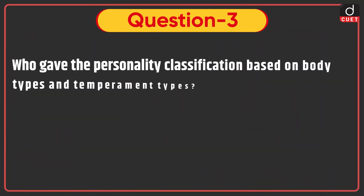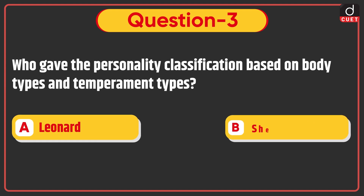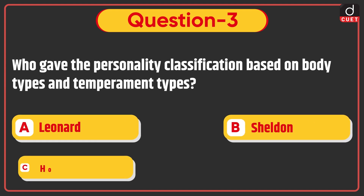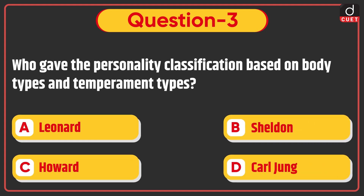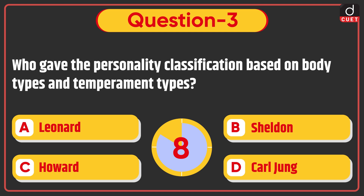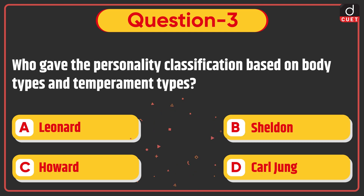Next question: who gave the personality classification based on body types and temperament types — Leonard, Sheldon, Howard, or Carl Jung? The correct answer is option B: Sheldon.